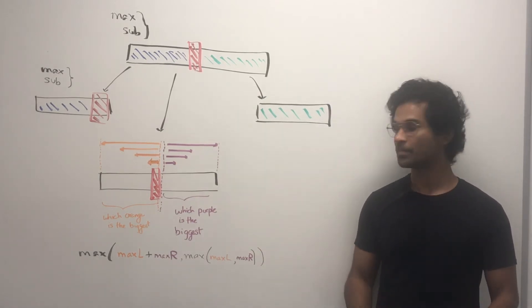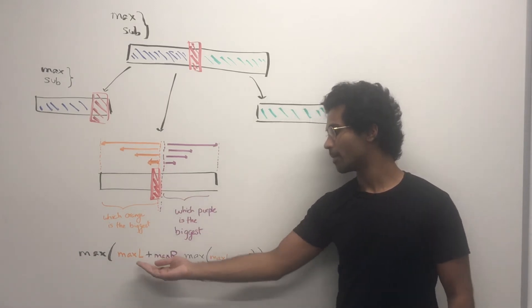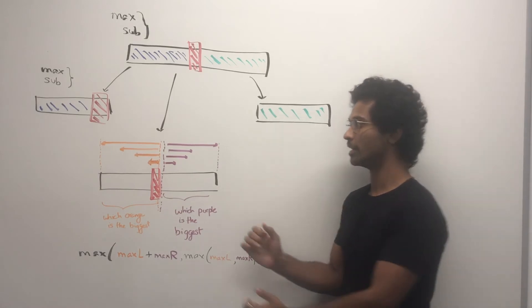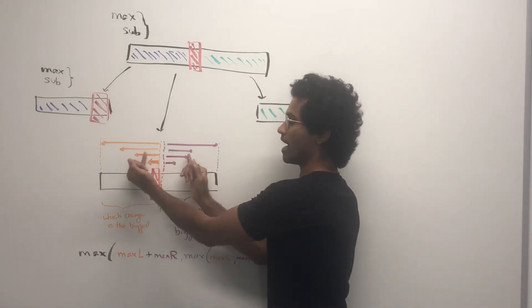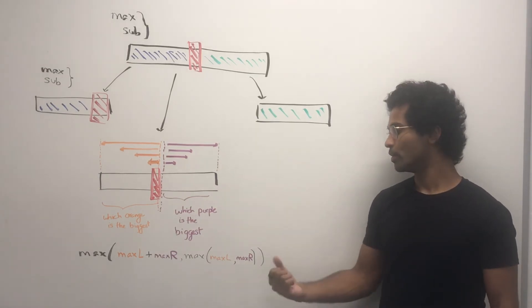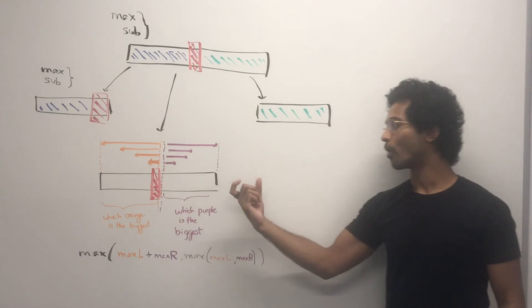Then what we can do is take the maximum of max L plus max R, which is one combination, meaning if we have these things being added up, could be the maximum, or we could choose simply one thing on the left side, or the right side.